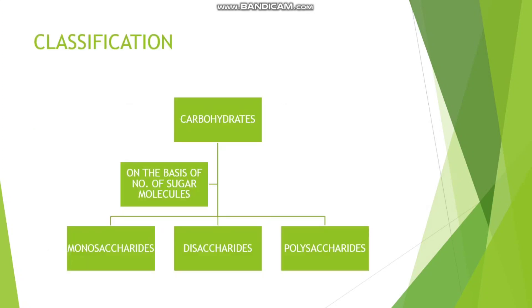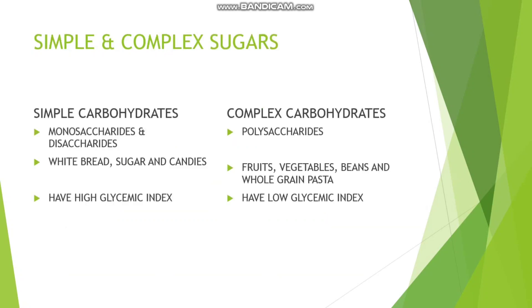If we classify carbohydrates on the basis of the number of sugar molecules, we divide them into three classes: monosaccharides, disaccharides, and polysaccharides. In terms of form, we call them simple or complex carbohydrates. In simple carbohydrates, we have monosaccharides and disaccharides; in complex carbohydrates, we have polysaccharides.